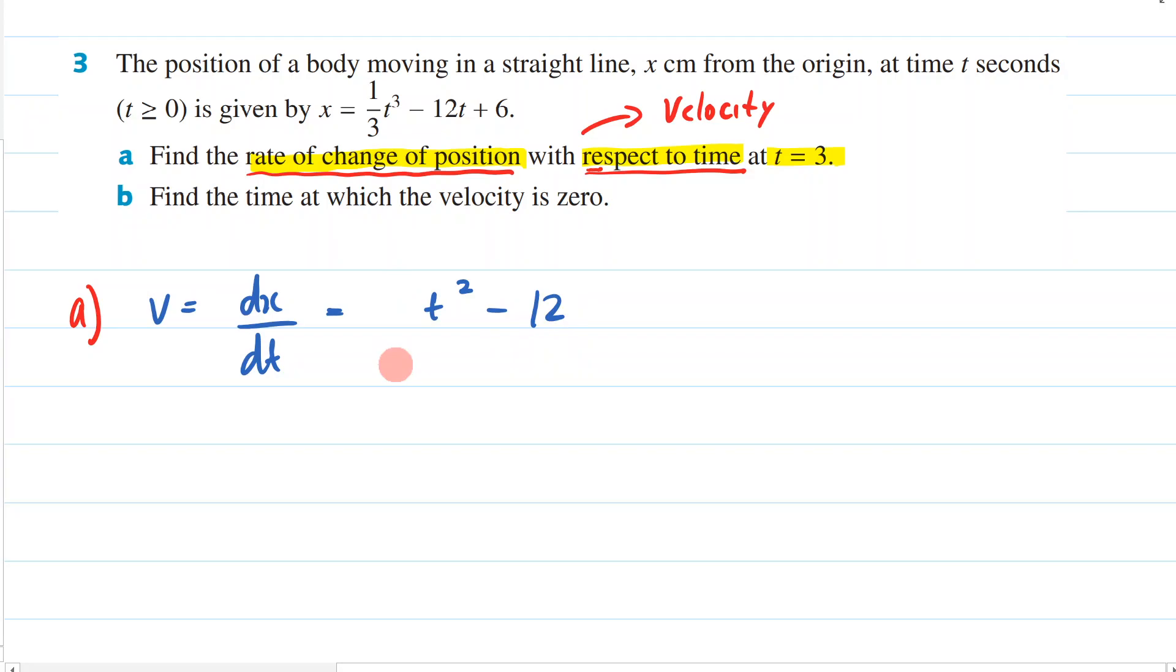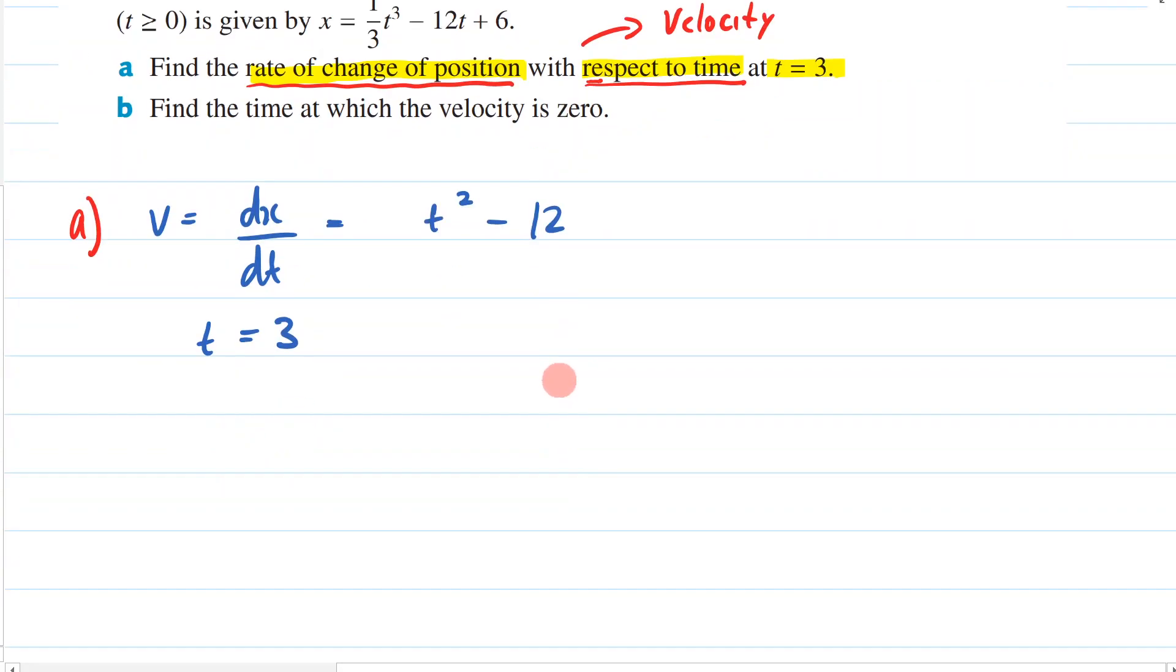Okay, then I'm going to say let t equal 3. In which case, I'm going to get v equals 3 squared minus 12, which is equal to 9 minus 12, which is equal to negative 3.